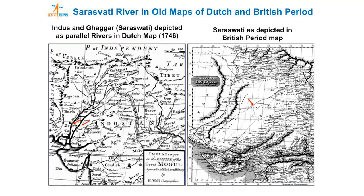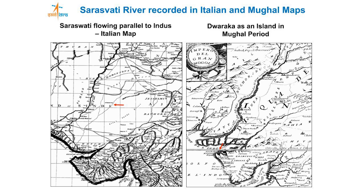Through ancient literature we get some evidence — names are there. Now let us look at old maps. We have a Dutch map of 1746 and a British period map. In all these maps the name 'Saraswati' is written. At least 200 to 300 years back, in the Survey of India maps, these names are mentioned. So one cannot say it is a myth — somebody surveyed and put a name. In Italian maps and Mughal maps also it is mentioned — meaning during all these periods it was there.